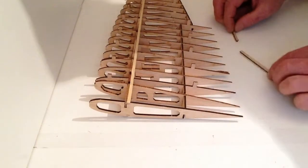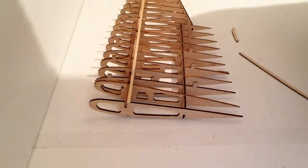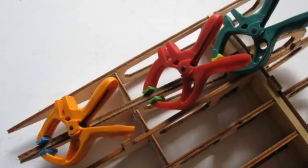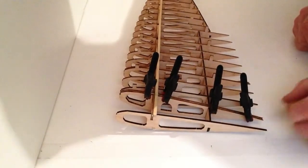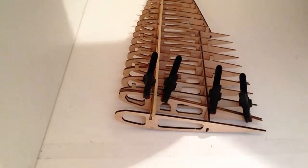Glue those two sections into position. Once again, clean up any excess glue and then clamp them down into position and allow that to dry before we continue with the next part of the stage.